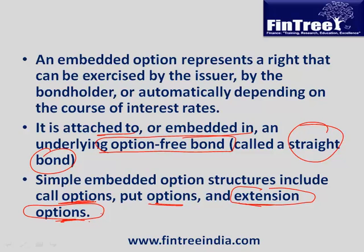An extension option involves extending the maturity of the bond. For example, the initial maturity promises two years, and at that stage you have the right to decide whether you want to extend it for an additional one or two years. The put option and extension option are both with the bondholder, while the call option is with the issuer. So can we say an extension option is essentially the same as a put option?